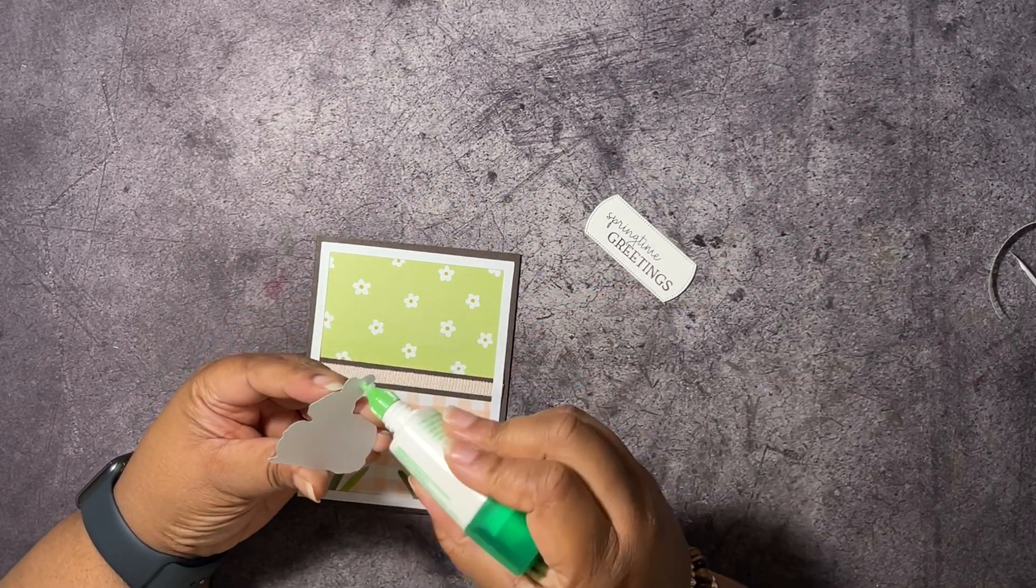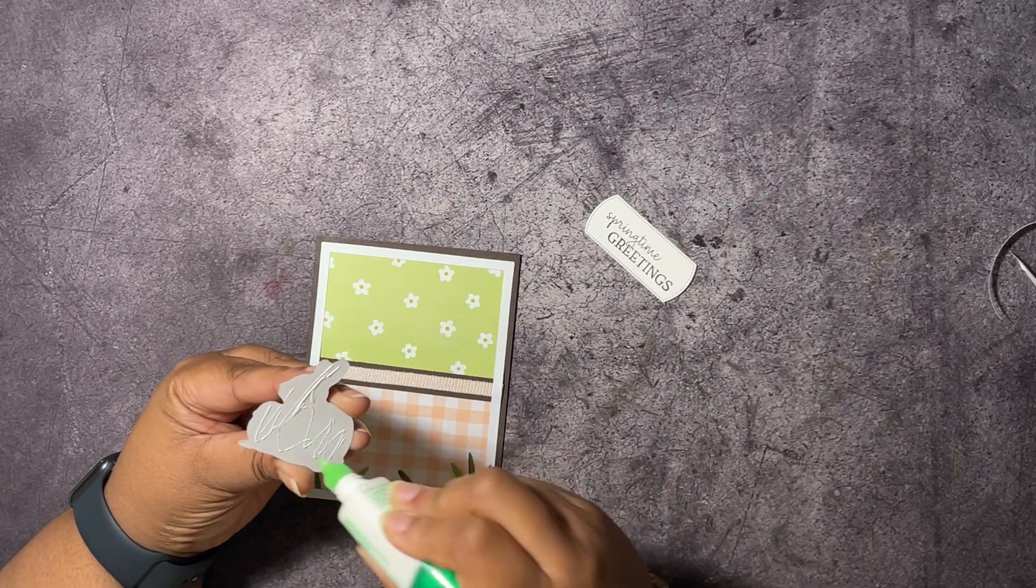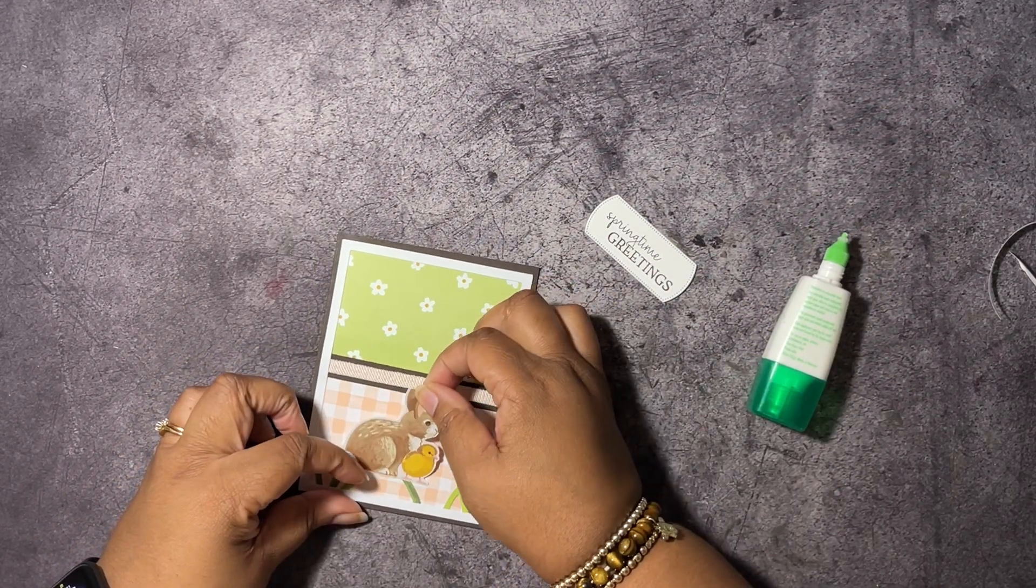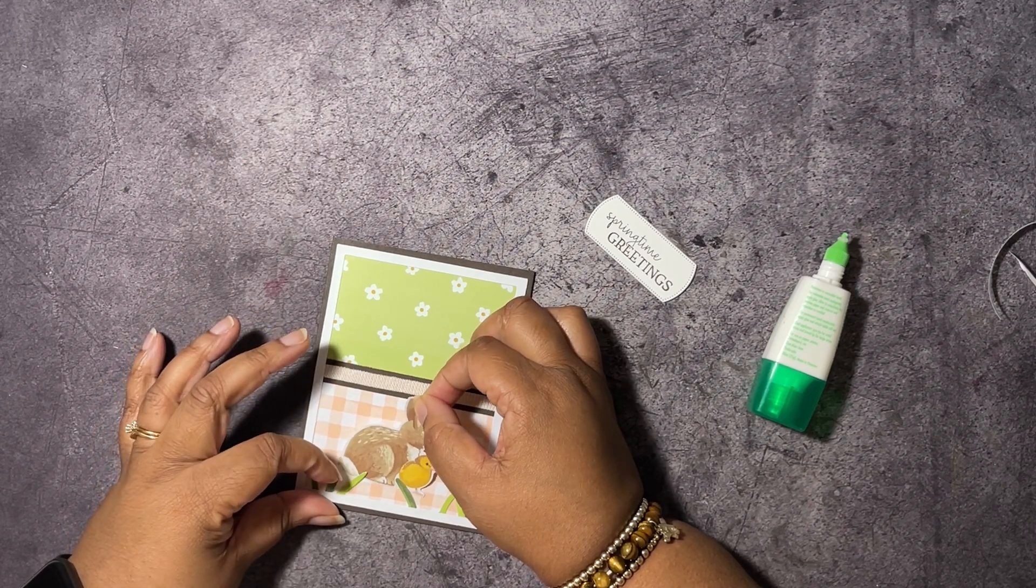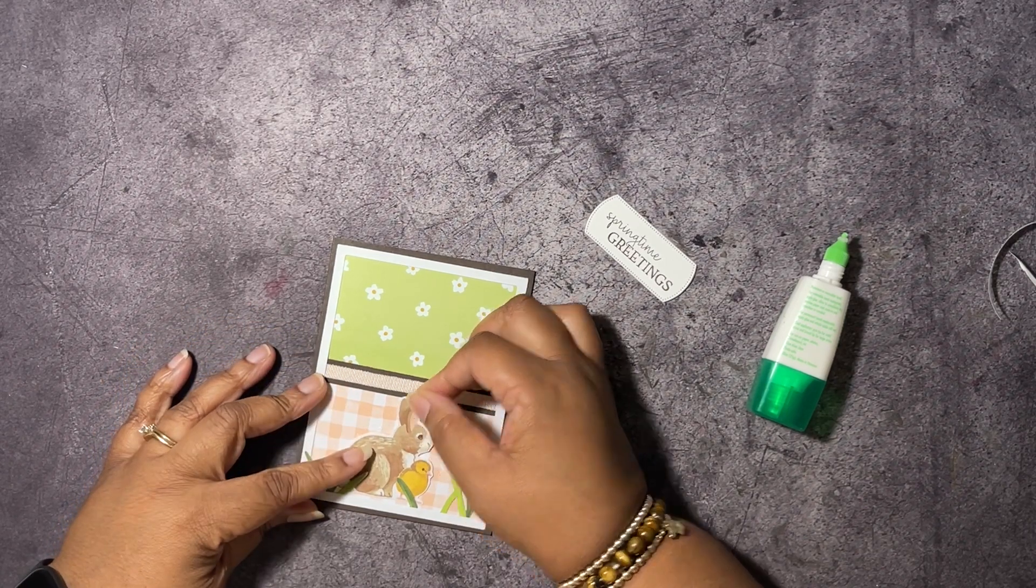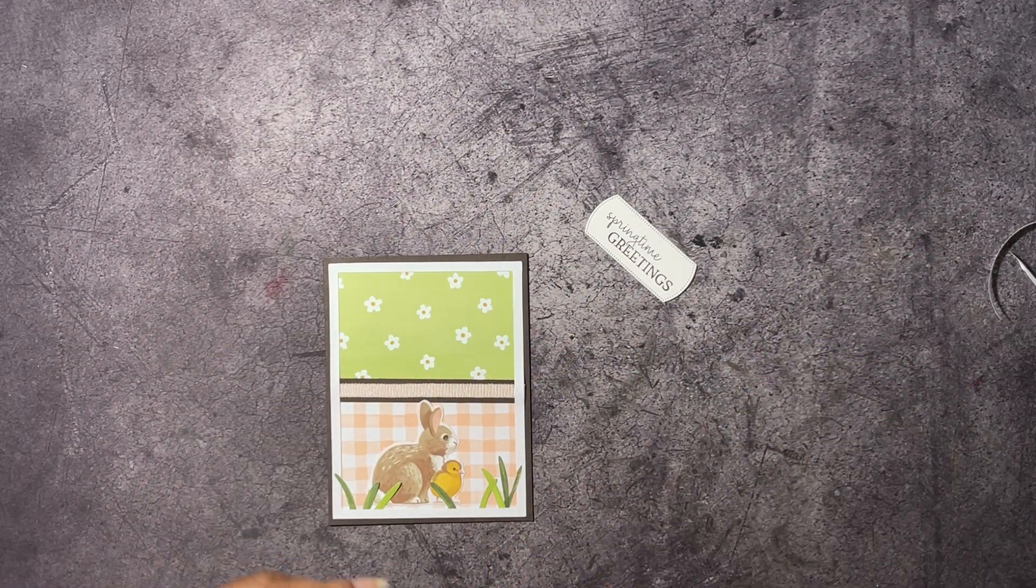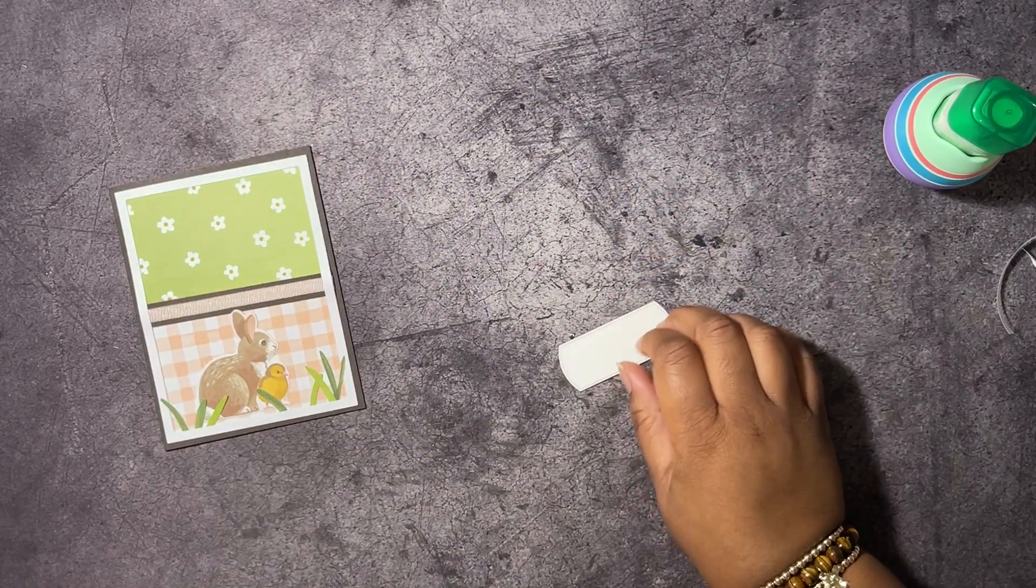I should have put this on top of here. Anyway, bunny and chick from the kit, I'm going to glue this down flat and we're going to slide them under these grass pieces. Just like that.